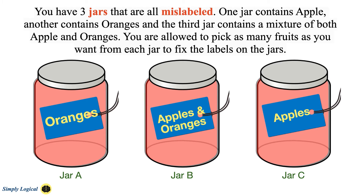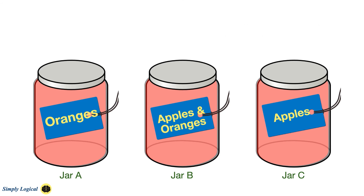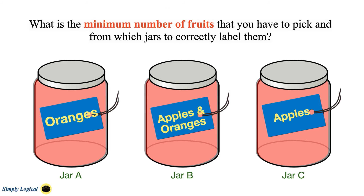You have three jars that are all mislabeled. One jar contains apples, another contains oranges, and the third jar contains a mixture of both apples and oranges. You are allowed to pick as many fruits as you want from each jar to fix the labels. What is the minimum number of fruits you have to pick, and from which jars, to correctly label them?